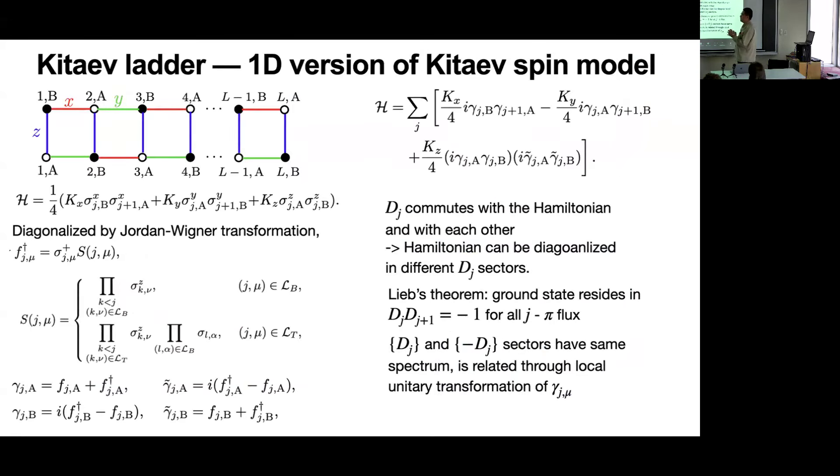Motivated by this research, we look at the Kitaev ladder, a one-dimensional version of the Kitaev spin model. We want to know whether there are boundary Majorana modes and how we can manipulate them in this spin system. The Kitaev ladder has X-bond, Y-bond, and Z-bond interactions between spin pairs. These models can be diagonalized by Jordan-Wigner transformation, mapping sigma-plus, the raising operator of spin, to the creation operator of fermions, with S_z being the string operator.